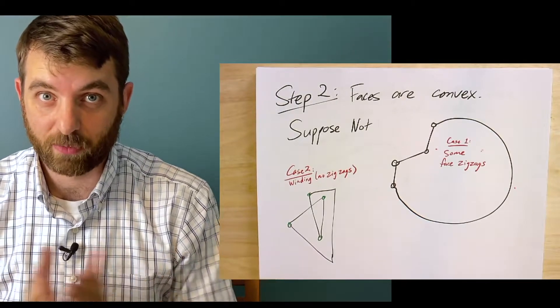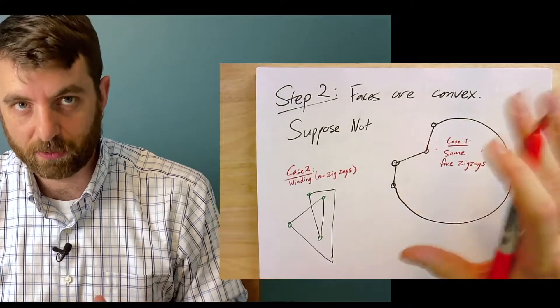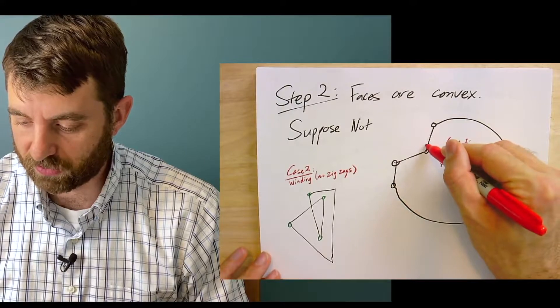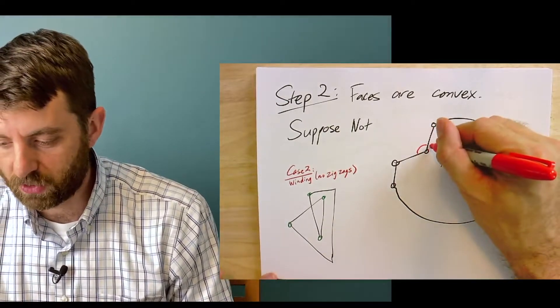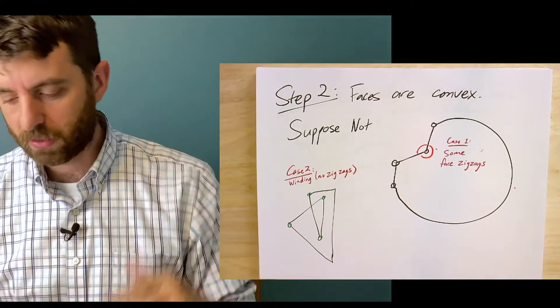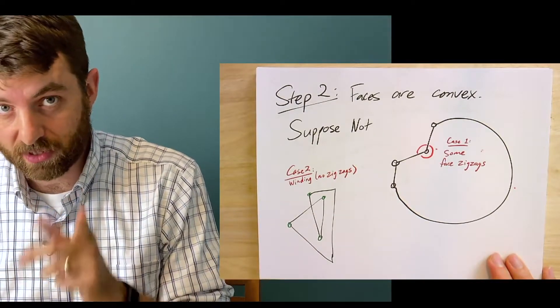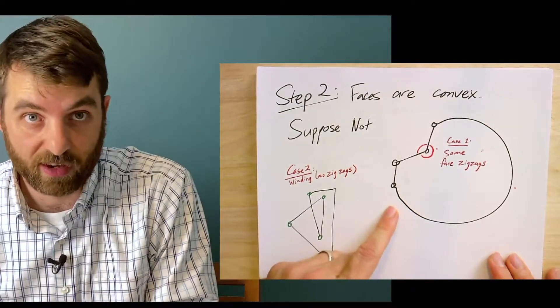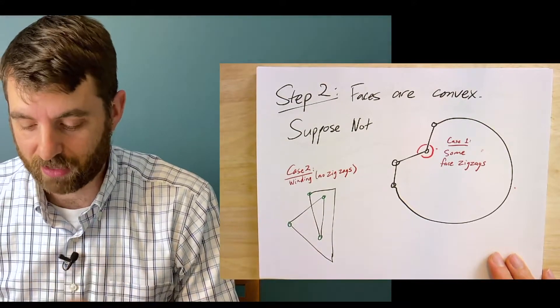You might think there's only one way for a polygon to not be convex - if it has some reflex vertex. A reflex vertex is one where the inside angle is more than 180 degrees, bent backwards. If you have such a reflex vertex, we'll show the graph must not have been planar. But that's not the only way to not be a convex face.